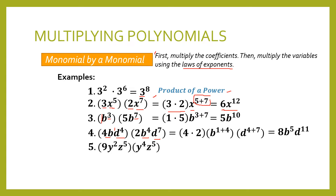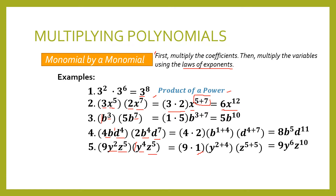For the last example in multiplying monomial by a monomial, we have 9y squared z raised to 5 times the quantity y raised to 4, z raised to 5. The numerical coefficient of our multiplier is 1, that's why we have 9 times 1 there. The exponents of y are 4 and 2, and exponents of z are 5 and 5. Simplifying, 9 times 1 is equal to 9, and then we have y raised to 6, z raised to 10.